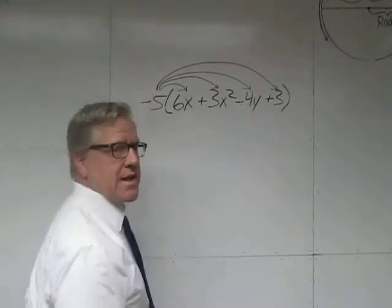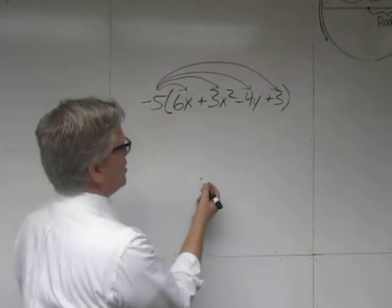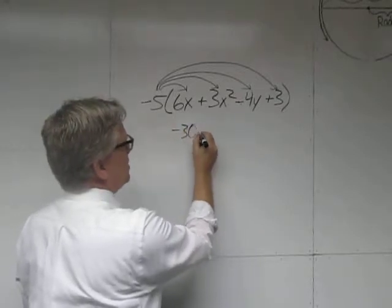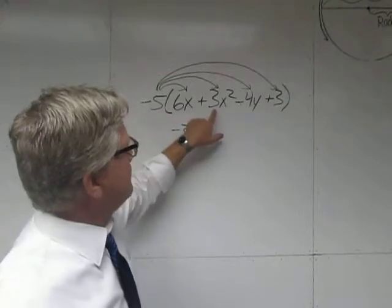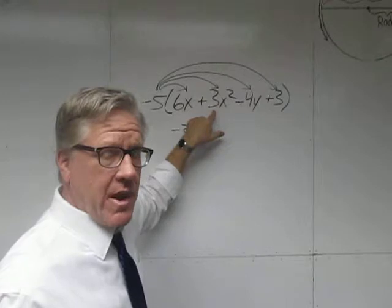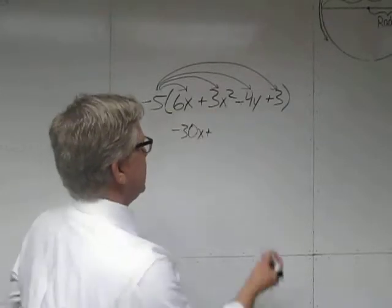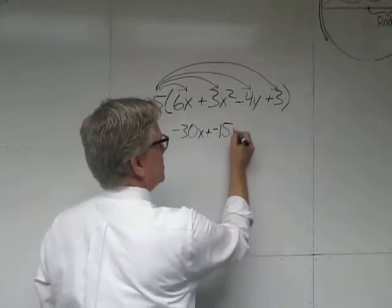Negative 5 times positive 6, what would that be? Negative 5 times positive is always negative. So we've got negative 30x, plus negative 5 times 3x squared. Negative 5 times 3 is negative 15, another positive times negative, negative times positive. Negative 5 times 3 is negative 15x squared.